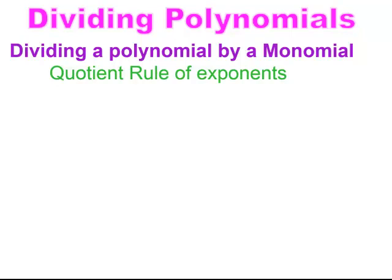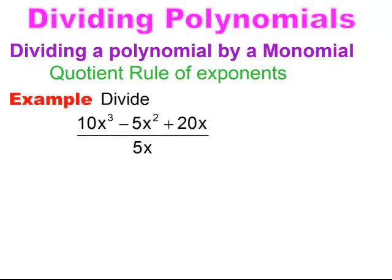Remember, the quotient rule of exponents is division, and you have to subtract the exponents and leave it where the higher exponent is. So we're going to do an example here. We have a polynomial: 10x to the third minus 5x squared plus 20x, all being divided by 5x.